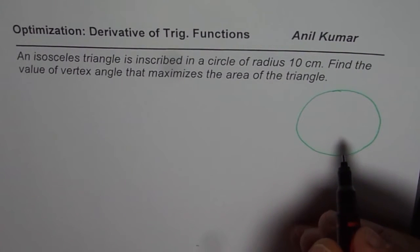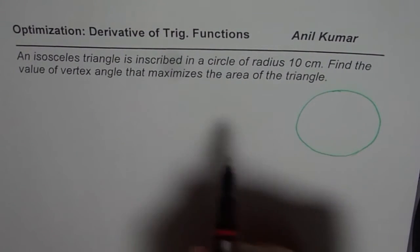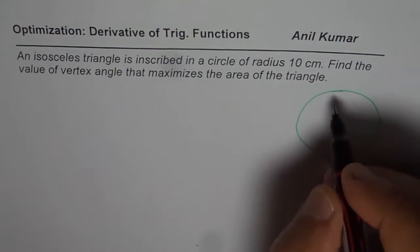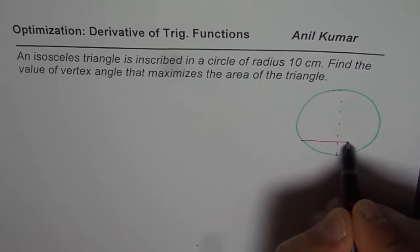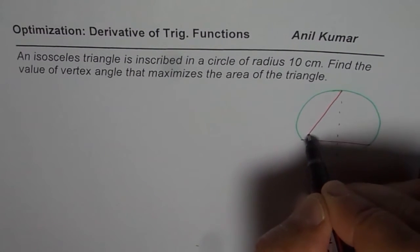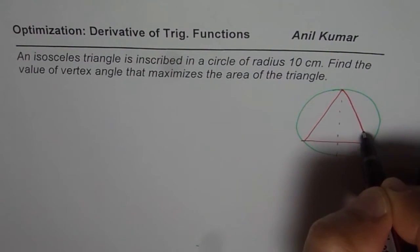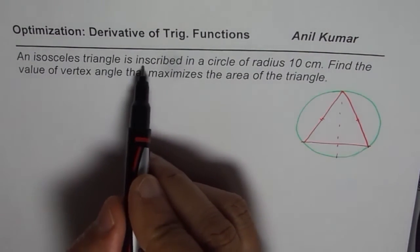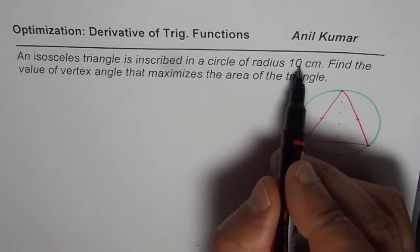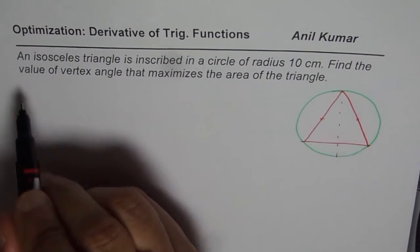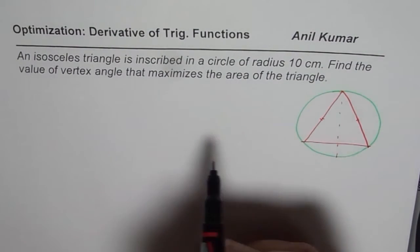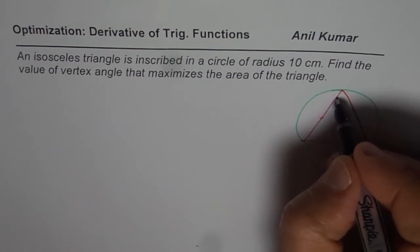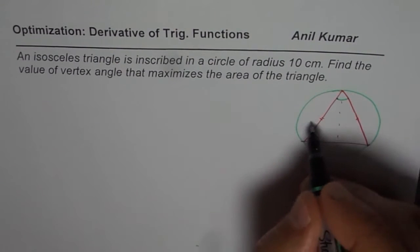We have a circle, and within the circle we are talking about an inscribed isosceles triangle. Let me sketch one here. So this is the isosceles triangle inscribed inside the circle. The question asks us to find the vertex angle — we'll call this the angle we need to find.